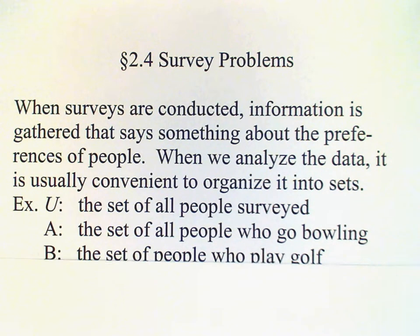For example, if we have a survey of the recreational activities that people like to participate in, then we could let U be the set of all people surveyed, the universal set. Set A might be the set of people who like to go bowling, and set B might be the set of people who like to play golf.